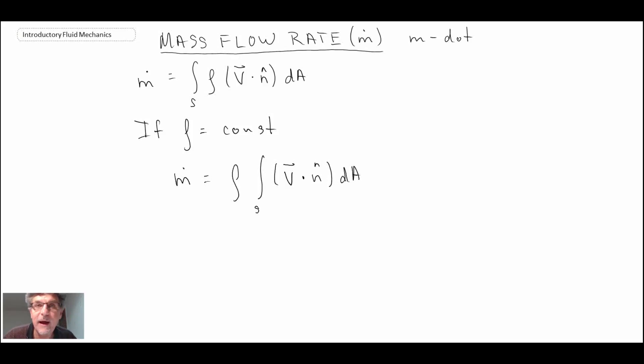If you recall from the segment where we evaluated volumetric flow rate, that means we can write it this way: M dot would then be rho times Q. So that is mass flow rate.